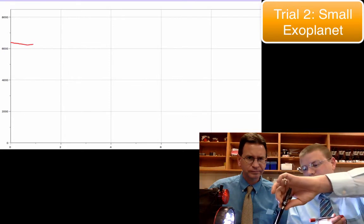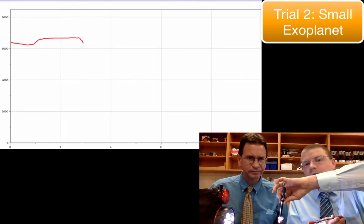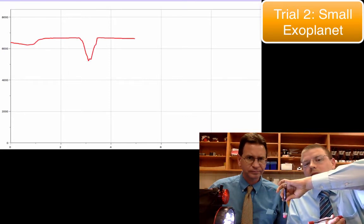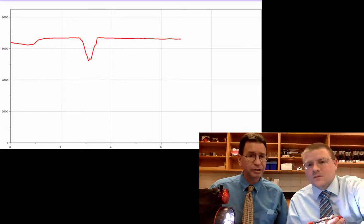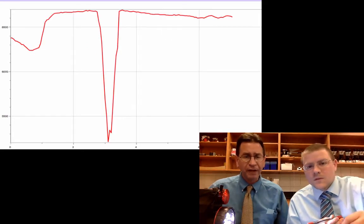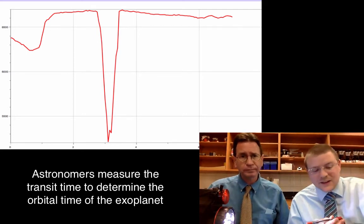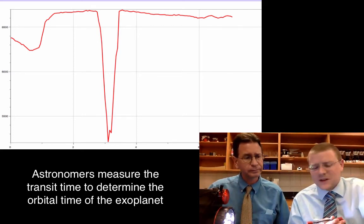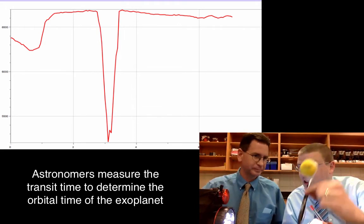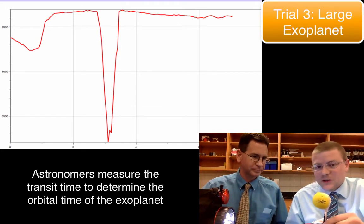Watch the graph now. I'm going to drop pretty significantly there. And for a very specific amount of time. Okay, so we could actually measure the transit time. And that can tell me that a planet passed in front of that star. Now I've got my larger planet going to go in front of my star again. Let's watch the light curve for larger planets.